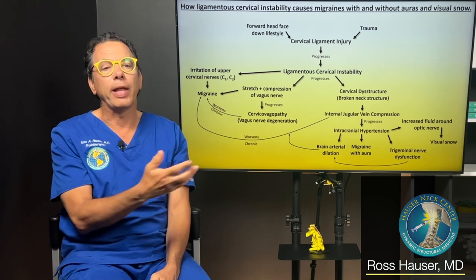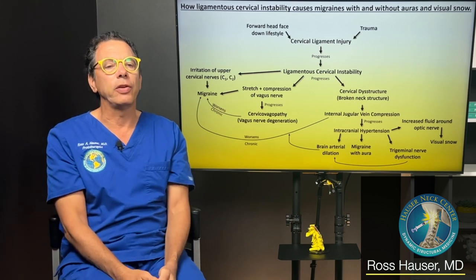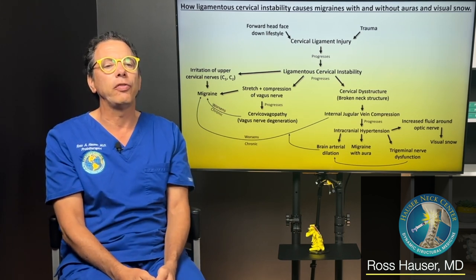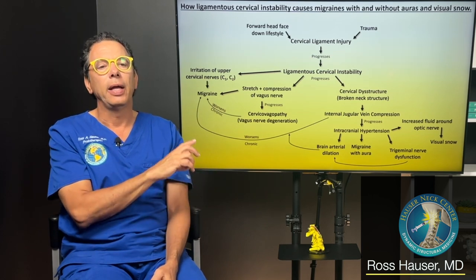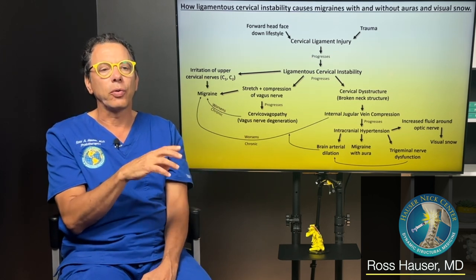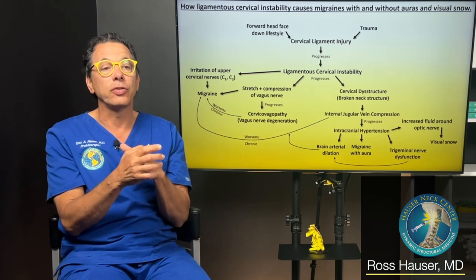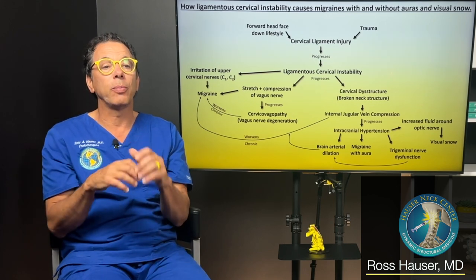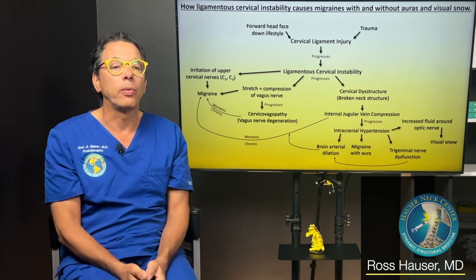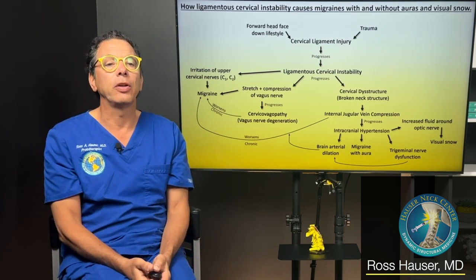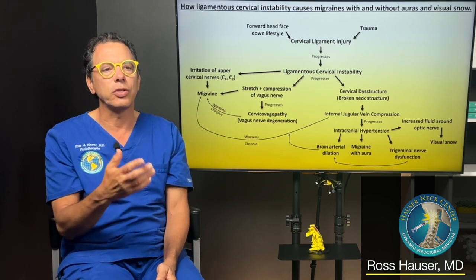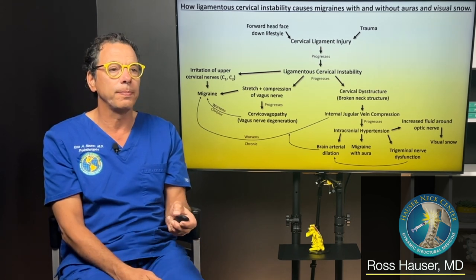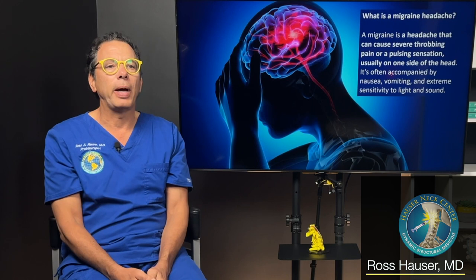So anything that causes arterial dilation in the brain is going to make somebody more prone to migraines. Part of the pathophysiology is trigeminal nerve stimulation or dysfunction. And when you get intracranial hypertension and internal jugular vein compression, you can get fluid around the optic nerve, which can cause all kinds of visual distortions such as visual snow.